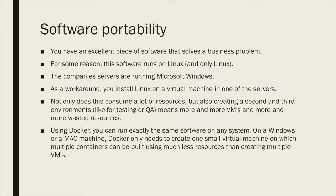For some reason the software runs on Linux only, but the company's servers are running Microsoft Windows. As a workaround you can install Linux on a virtual machine — for example using VMware or VirtualBox — and deploy the application there. But this consumes a lot of resources, and the problem gets worse when you want to create second and third environments for testing and quality assurance, meaning more virtual machines and more wasted resources. Using Docker, you can solve this by running exactly the same software on any system. On a Windows or Mac machine it runs exactly the same as on your Linux machine, with Docker only needing one small virtual machine on which multiple containers can run, using much less resources than multiple VMs.